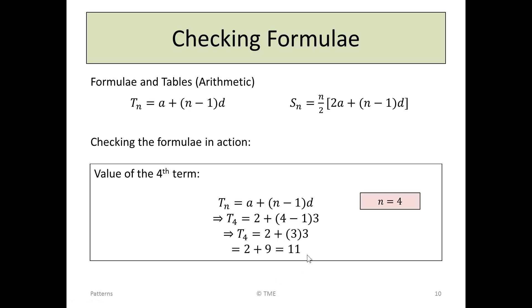Plugging in the values, we say, everywhere we see N, we go to our number here, we put in T4, equals A was 2, the first term, plus, instead of N, we substitute 4, 4 minus 1, and for D, the common difference, we say it's 3. Working the calculations, T4 is 2 plus, within the brackets, 4 minus 1 is 3, 3 times 3, 2 plus 3 times 3 is 9, 2 plus 9 is 11.